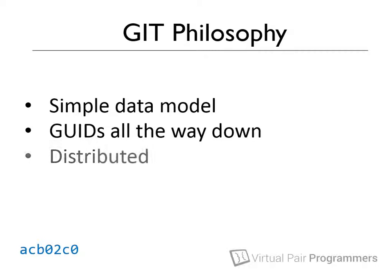Git is a distributed change management system. This means that developers are free to write code and check it into Git without the need for some centralized repository. If you use Subversion, for example, most actions — such as looking at a log of what's changed or adding a new file — need your computer to talk to a server. With Git, every developer has a complete clone of the full repository that they can work with. You can take your laptop on a plane with no network connectivity and carry on making changes and checking in code. It's only when you want to synchronize your changes with some other repository that data needs to flow over the network, and Git does that in a very performant way.